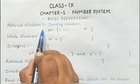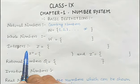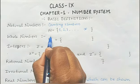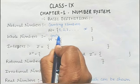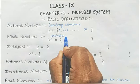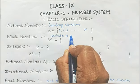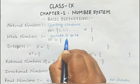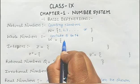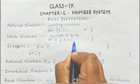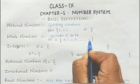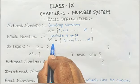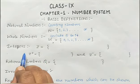The second topic is whole numbers. If we include 0 to the set of natural numbers — means 0, 1, 2, 3, and so on till infinity — then this collection will be known as whole numbers.